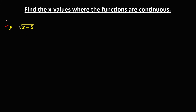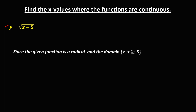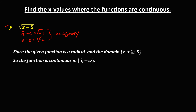For this given function, since it is a radical function, the domain is x such that x is greater than or equal to 5. Because if x is less than 5, the expression under the radical becomes negative, and the square root of a negative number is imaginary. Therefore, this function is continuous if x is greater than or equal to 5, or in interval notation, the closed interval from 5 to positive infinity.